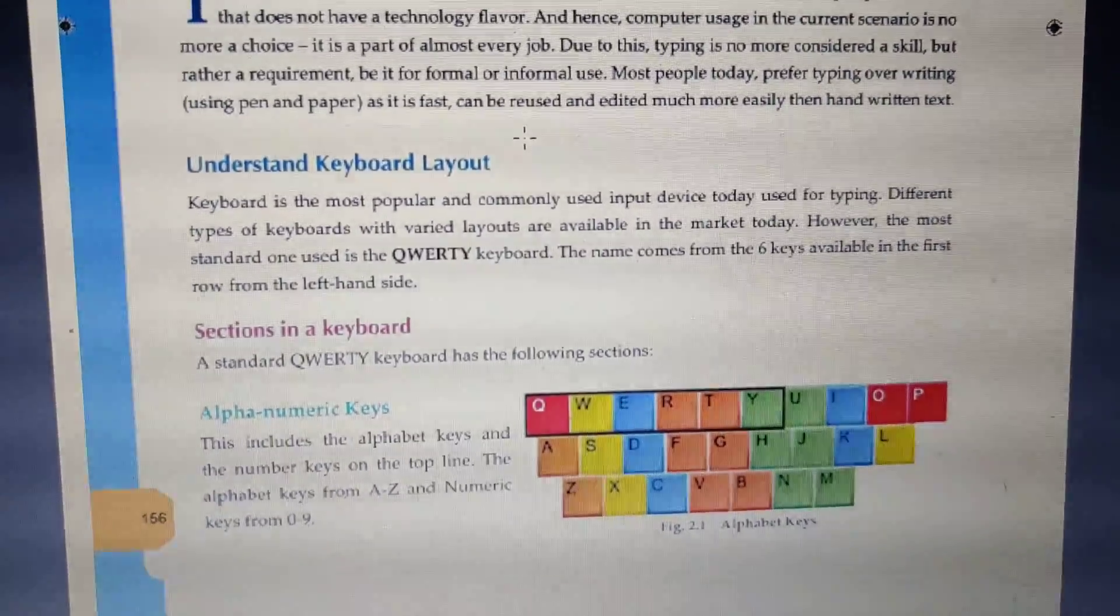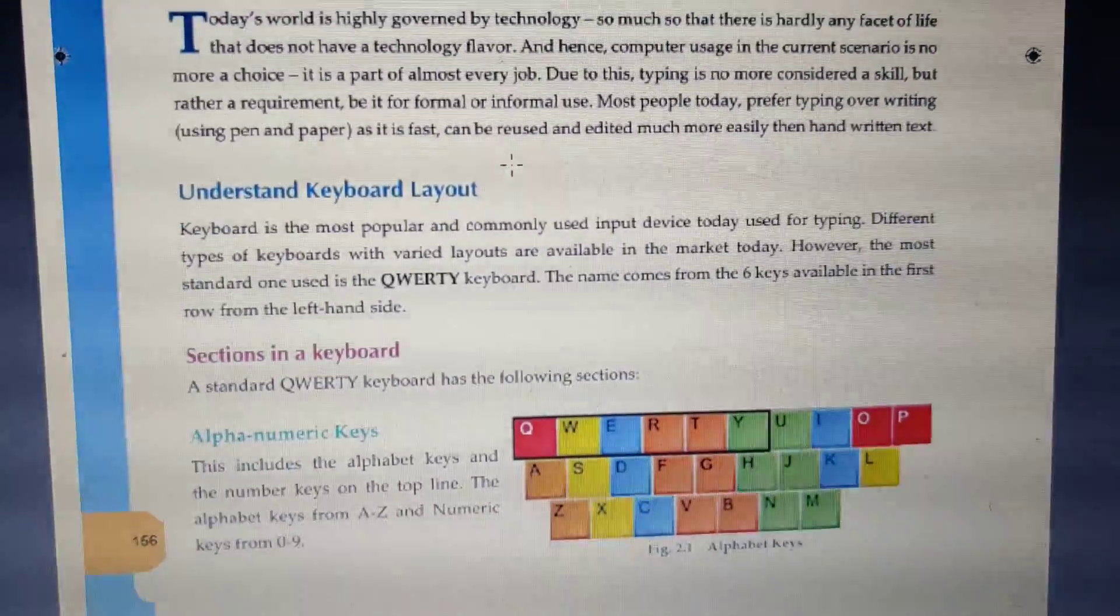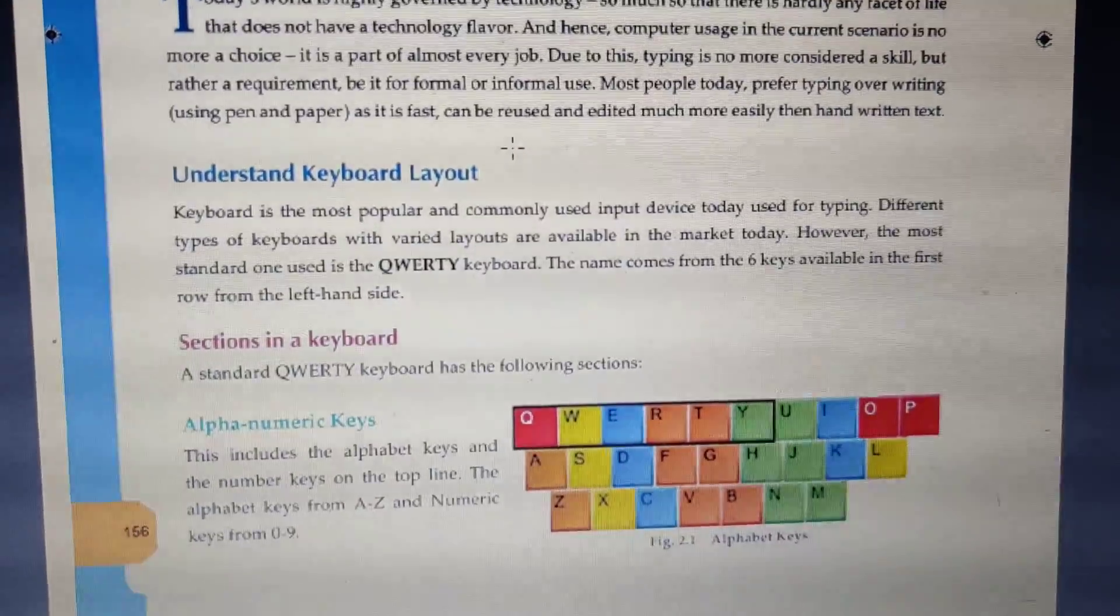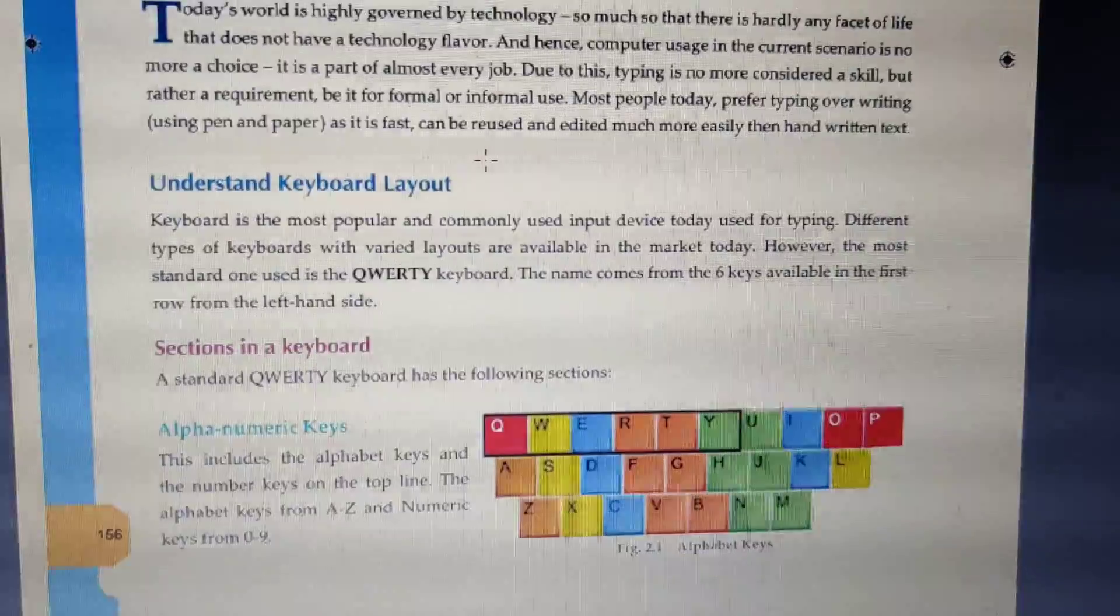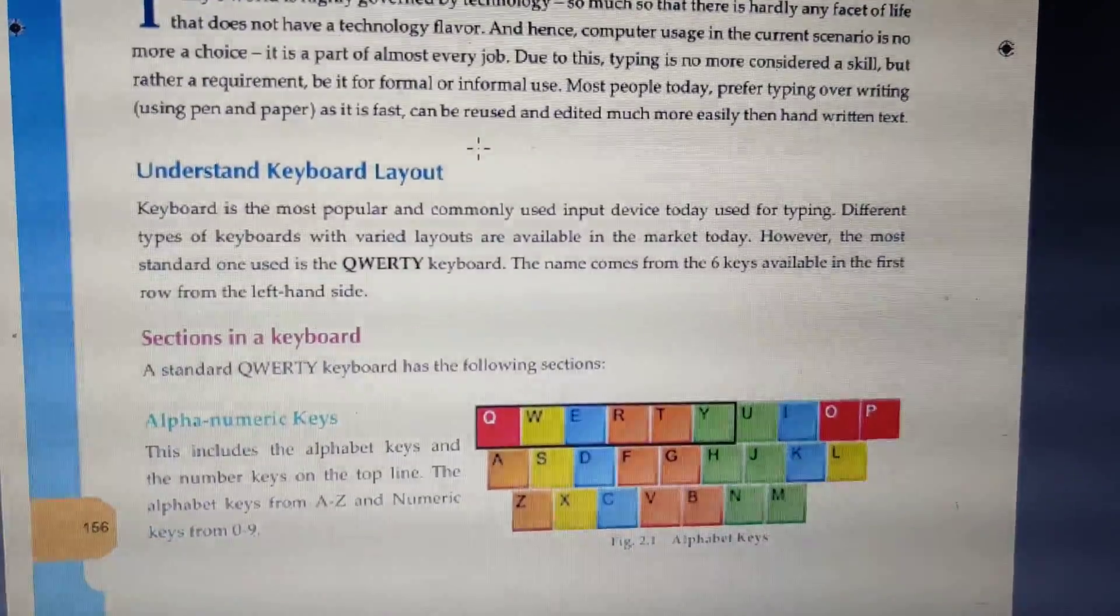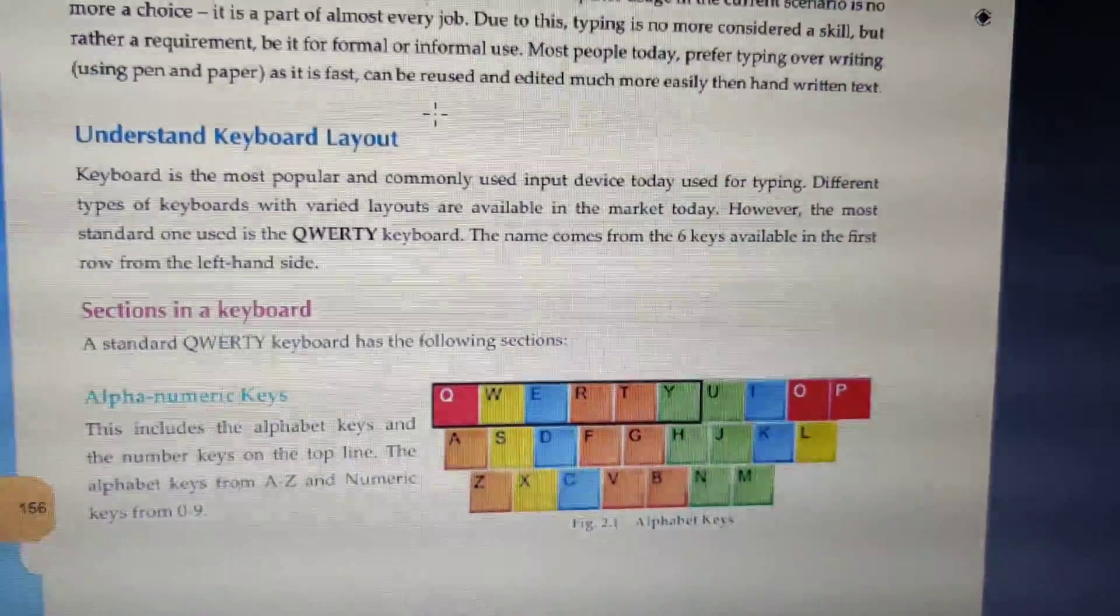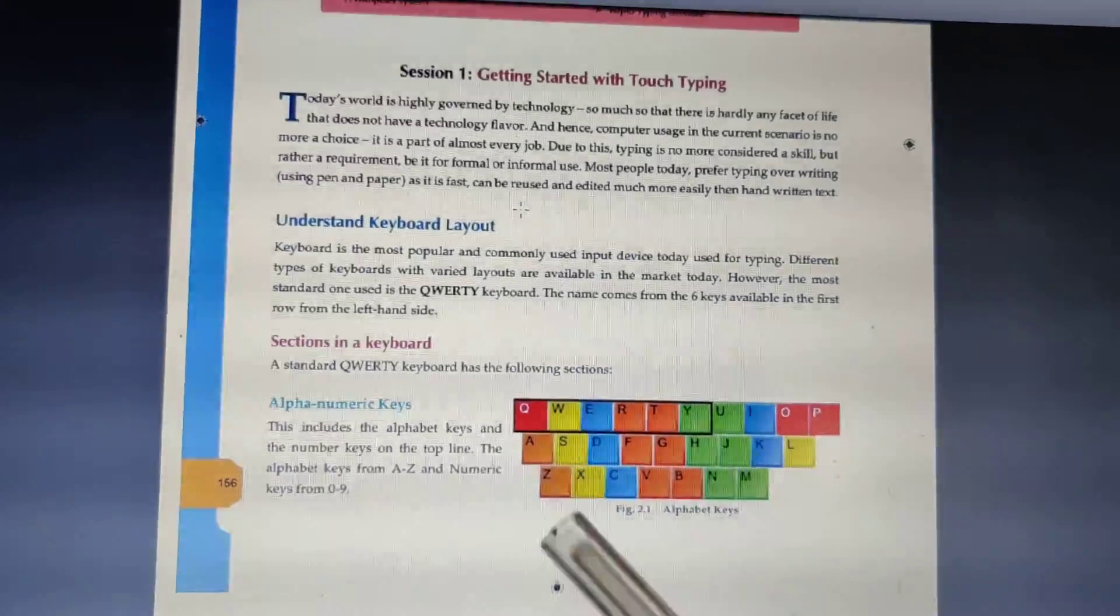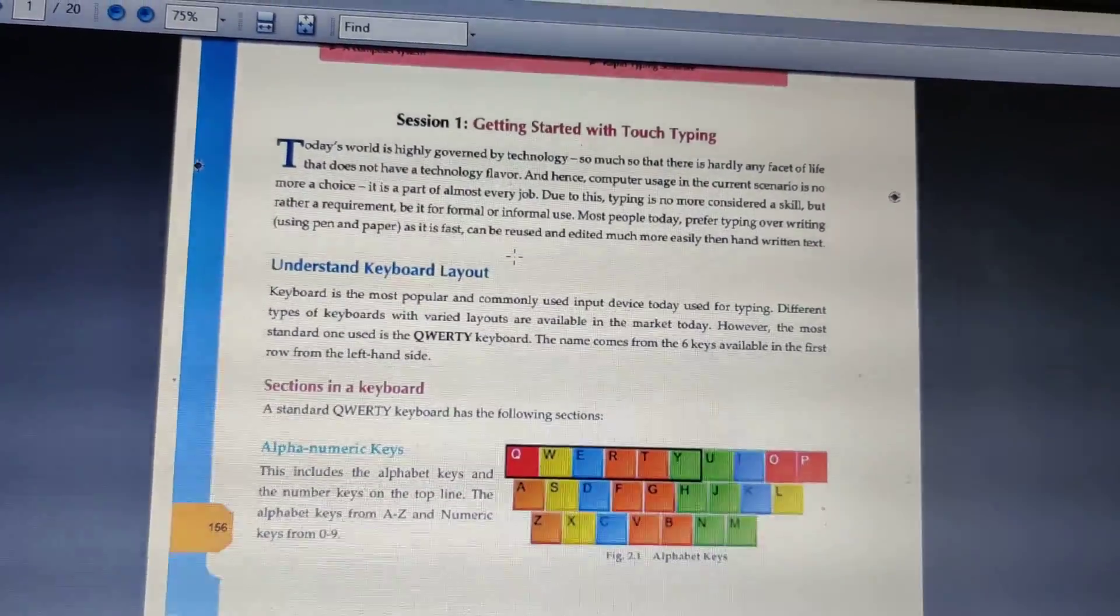Understand keyboard layout. Keyboard is the most powerful commonly used input device today, used for typing. Different types of keys with various layouts are available in the market today. However, the most standard one is QWERTY keyboard. The name comes from the six keys available in the first row from the left hand side. As you can see here, Q-W-E-R-T-Y, QWERTY. From there we get this name.